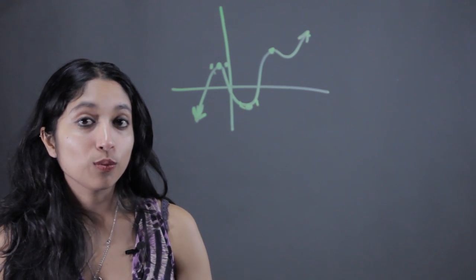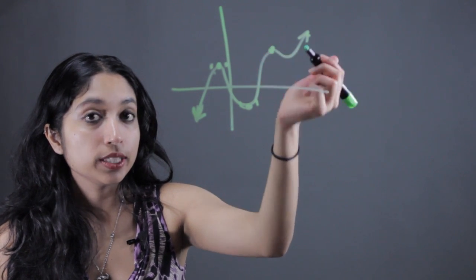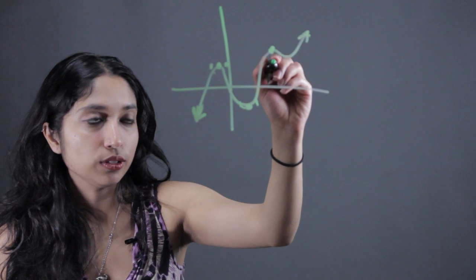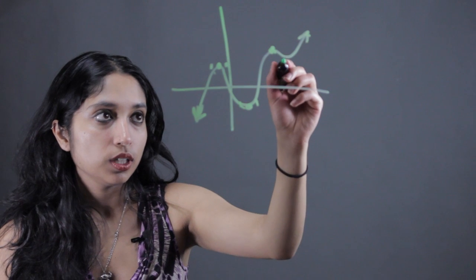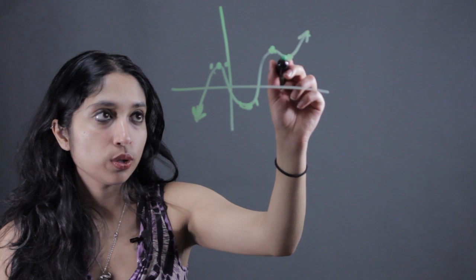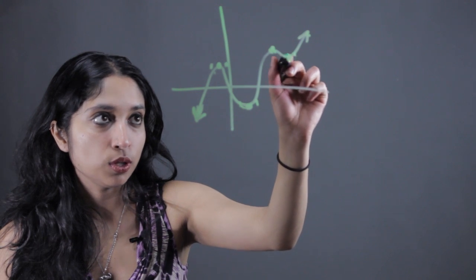And so if you're just trying to locate local maxima and local minima or peaks and valleys on a graph, how to calculate it, you just look for the points that meet this definition. There's another one right here because this is lower than any of the values in a really small interval.